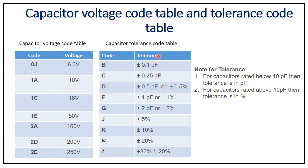Continuing the tolerance table: J = ±5%, K = ±10%, M = ±20%, and Z = +80%/−20%. For codes D through G, if the capacitor value is below 10 picofarads use the picofarad value; if above 10 picofarads use the percentage value.